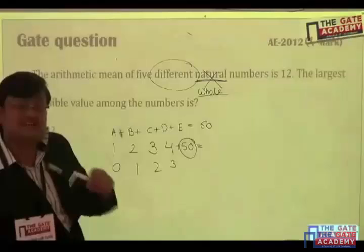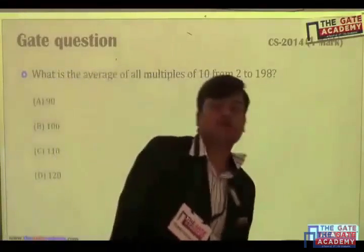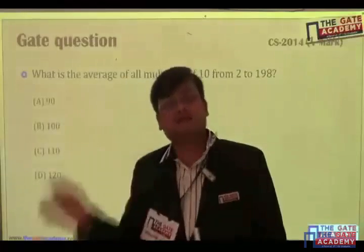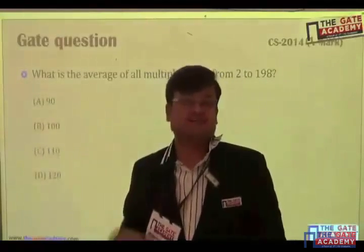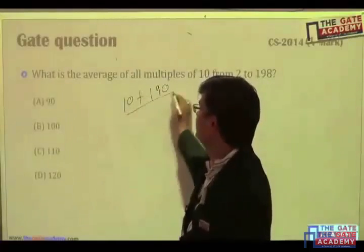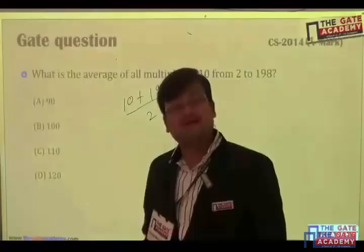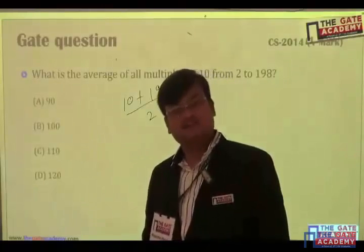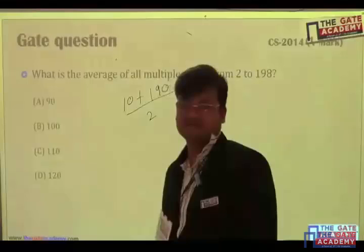This question can be solved by 2 ways. One way is that applying the formula of AP. Why AP? The series is in AP. Multiple of 10s from 2 to 198. So, what are the numbers? 10, 20, 30, 40, 50, 60, 70, 80, 90 till 190. So, to find the average of that, it is very easy. First number plus last number divided by 2. This is applicable only in case of AP. Please note it down. The formula is first term plus last term divided by 2. So, your answer will be 100.